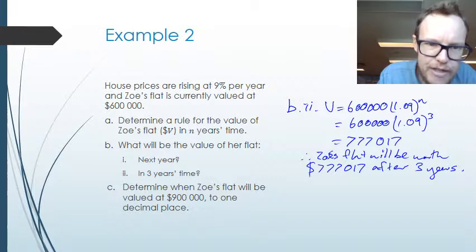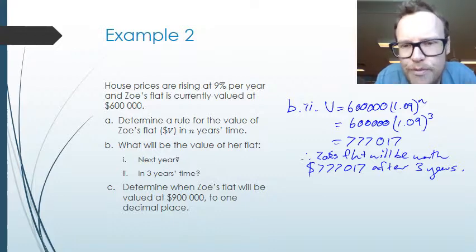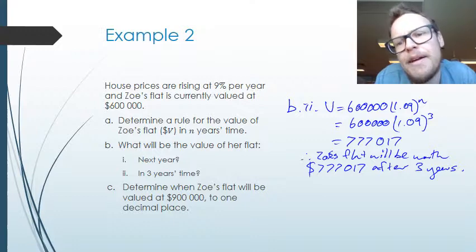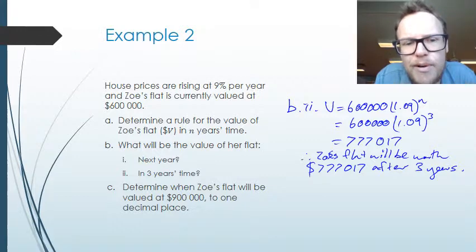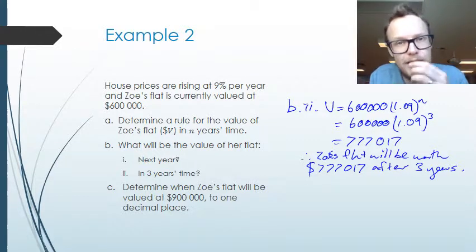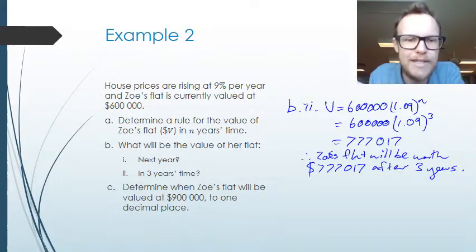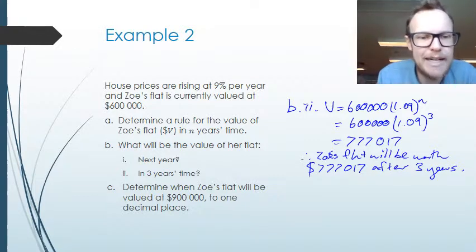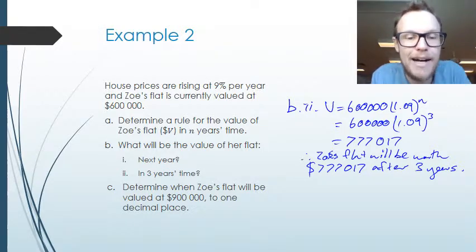Part c asks us to determine when Zoe's flat will be valued at $900,000 to one decimal place. We currently don't have an algebraic method to determine the value of an exponent, so we need other strategies. One strategy is to draw a graph — if the graph is accurate enough we can read the value off it. We look at when the graph reaches $900,000.